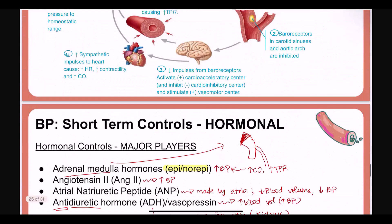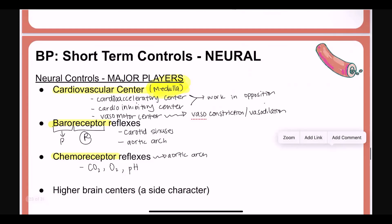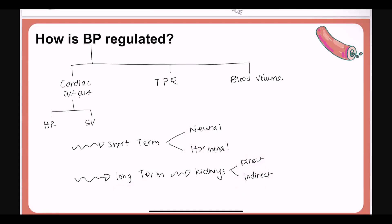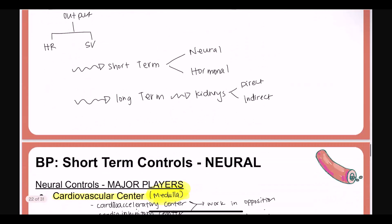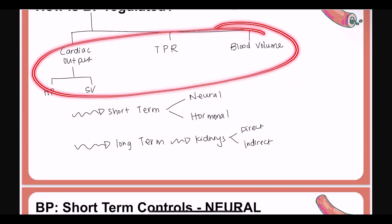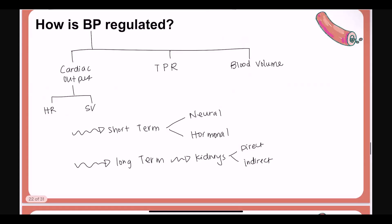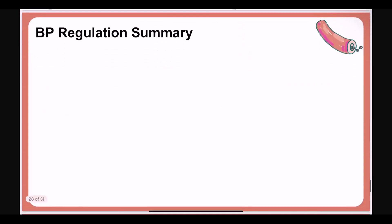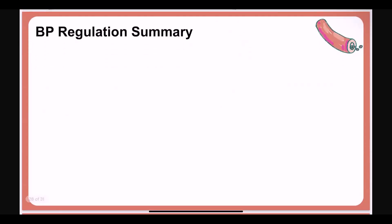So we've done a lot of things here. We've talked about neural controls, hormonal controls, and direct and indirect mechanisms of the kidneys as long-term controls. There are lots of details, but what I really want you to understand is how these three things affect blood pressure. Hopefully by the time you watch this video, I'll have a blood pressure regulation summary worksheet — a flow chart — to help you sort through all of this stuff together. Alright, I hope you enjoyed this one.